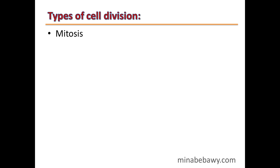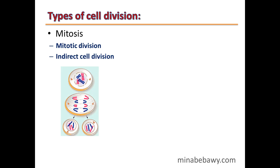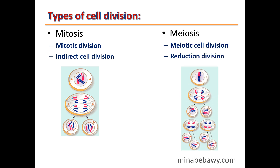There are two types of cell division. The first is called mitosis, or mitotic division, or indirect cell division. The second type is meiosis, or meiotic cell division, also called reduction division.